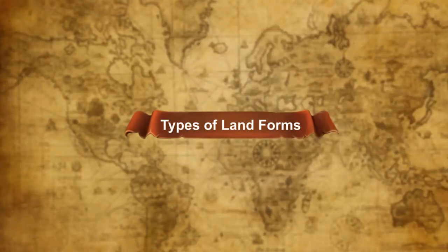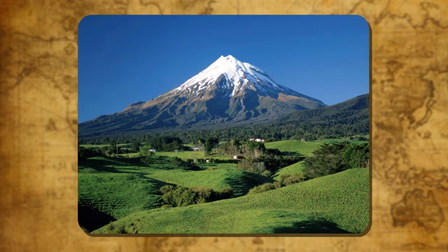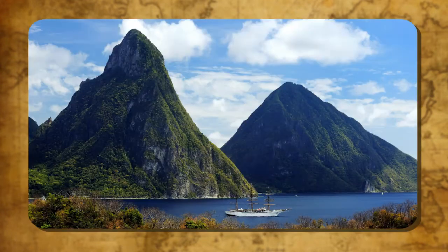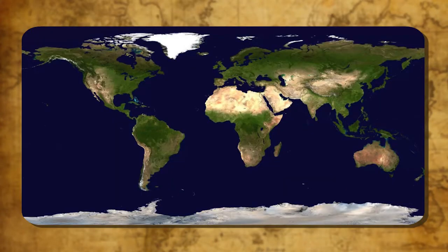Types of Landforms. We find a variety of landforms over the earth's surface. Broadly, we can group these landforms depending on elevation and slope as mountains, plateaus and plains. A mountain is any natural elevation of the earth's surface which rises more than 600 metres above the sea level. The mountains may have a small summit and a broad base.